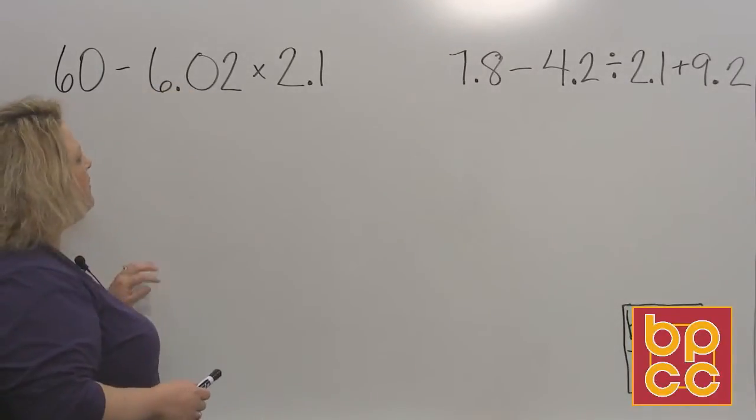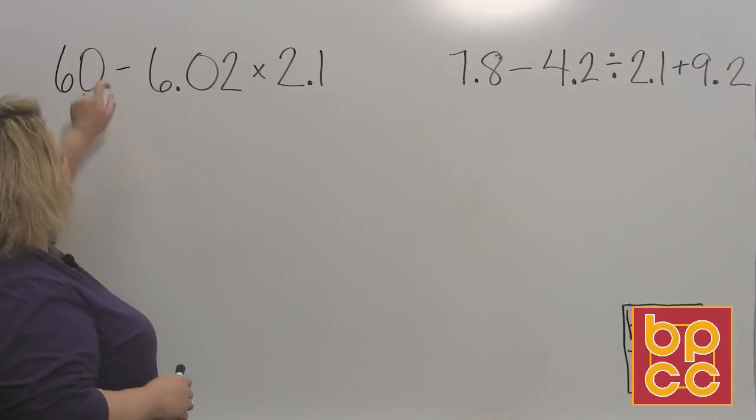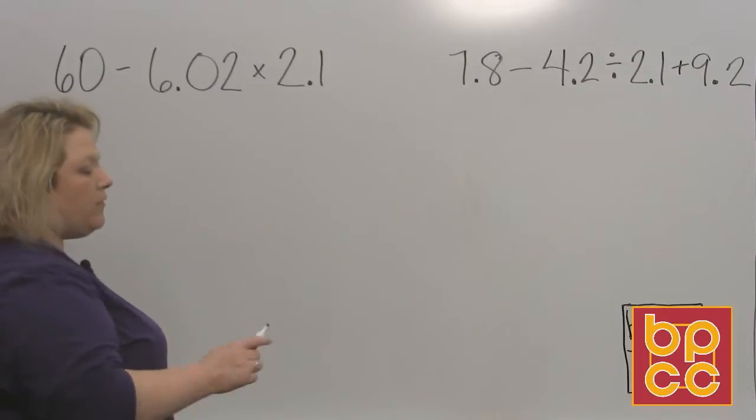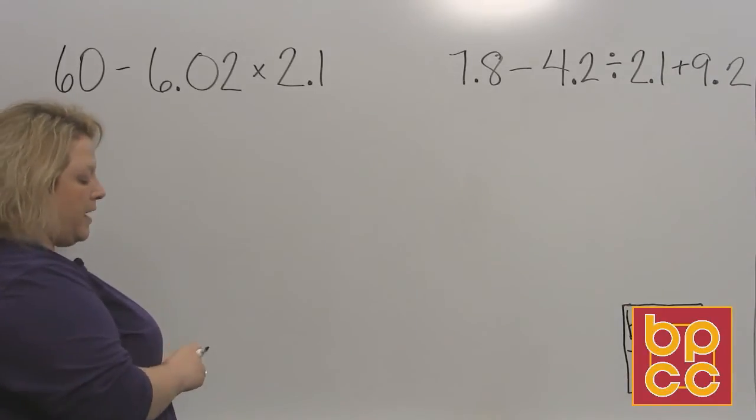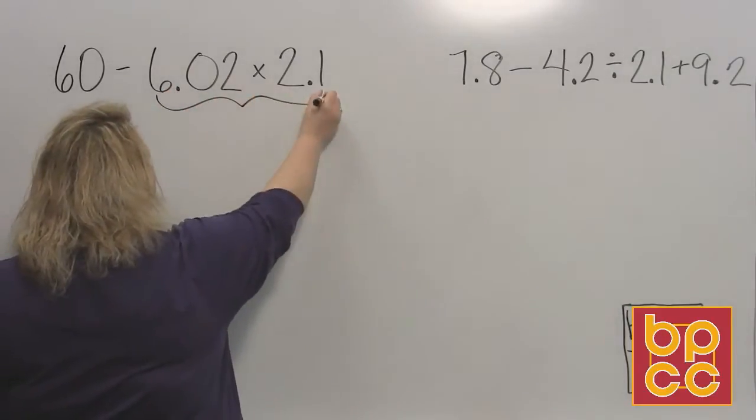So this first example has three different pieces, and it's got two operations. I see a subtraction, and I see a multiplication. So what we want to do is, the order of operations says we do multiply and divide from left to right. We do that first. So we're going to do this first. This is multiplication.